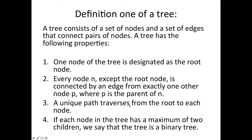A unique path traverses from the root to each node. So that just means you can't have more than one path to get to there.